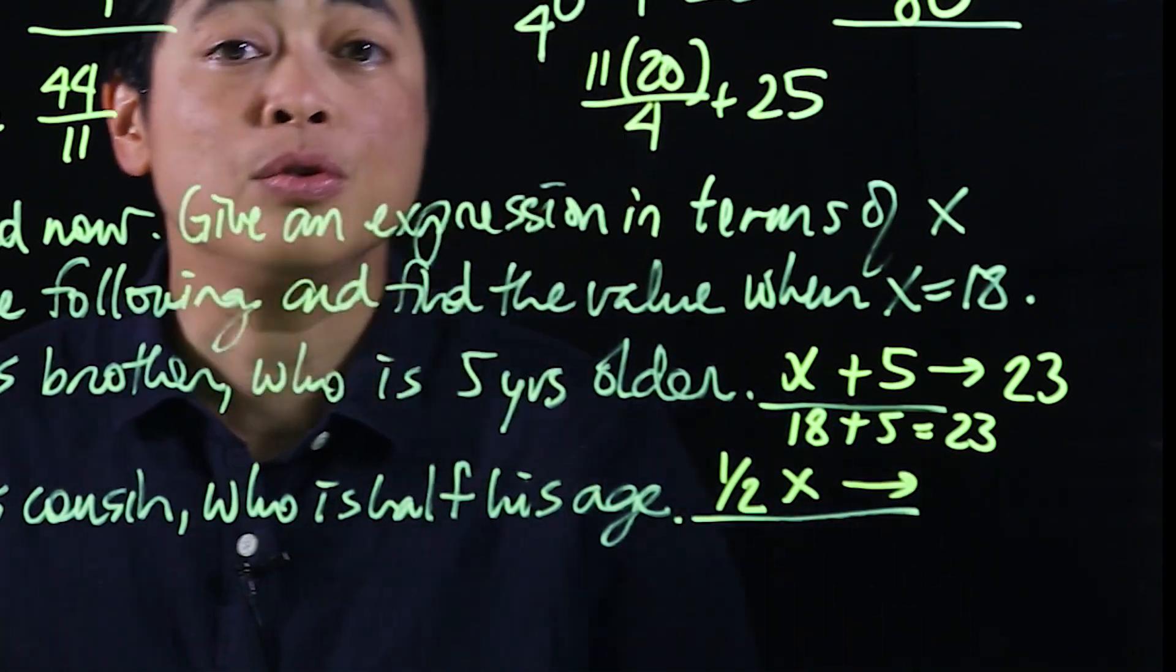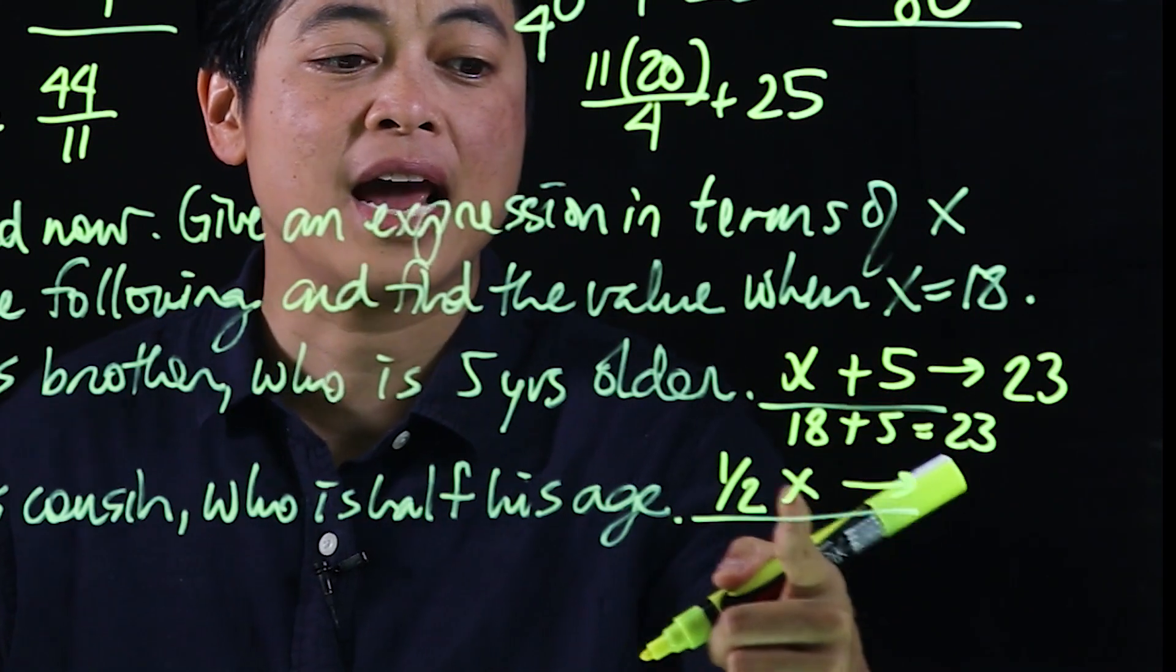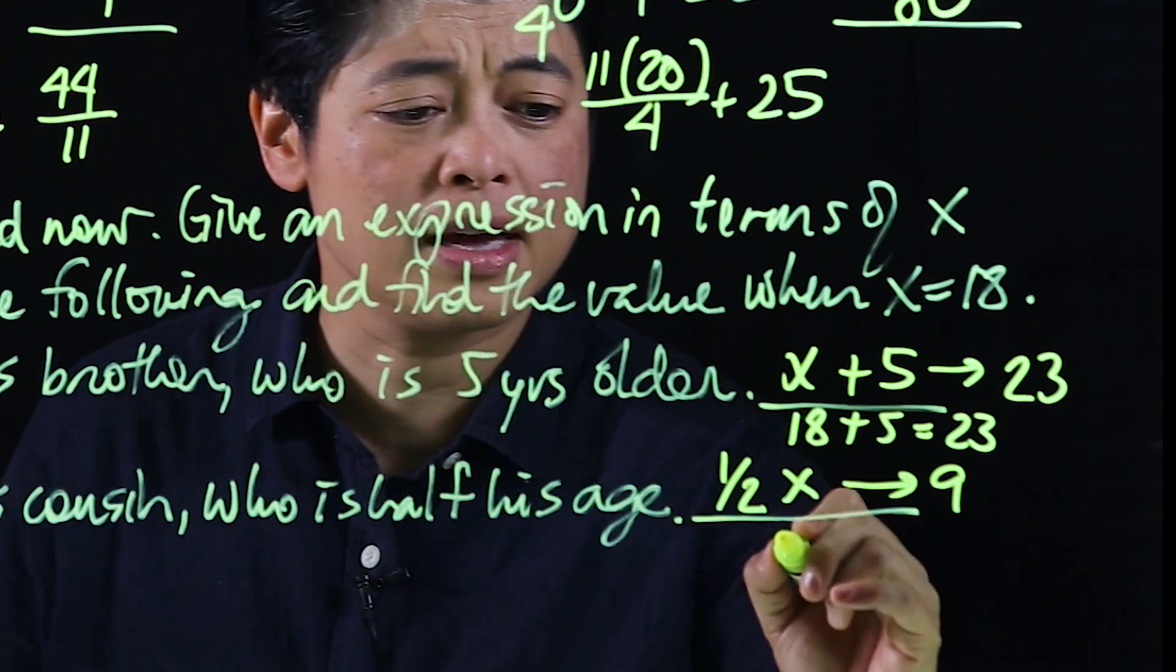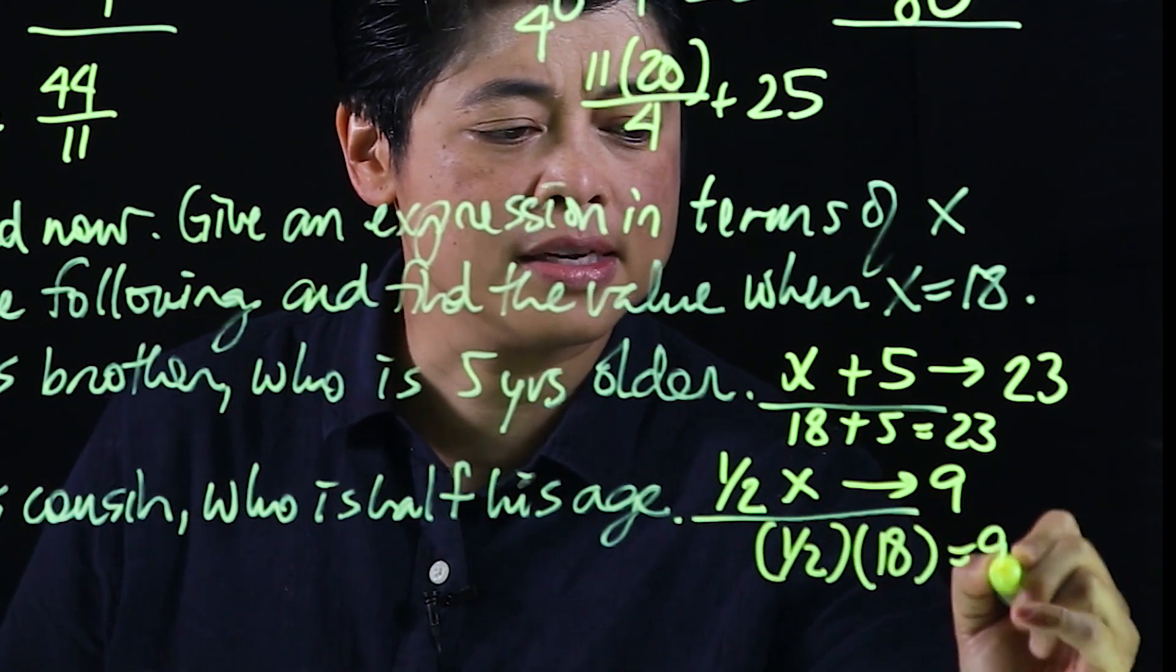So again, if you can do mentally, which you should because x is 18, half of 18 is 9. But if you wish to write it down, then that means that's 1 half times 18 is 9.